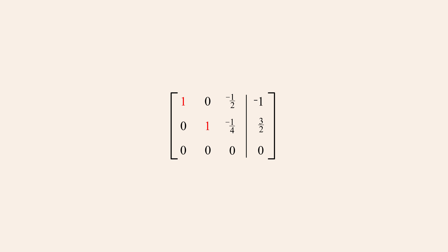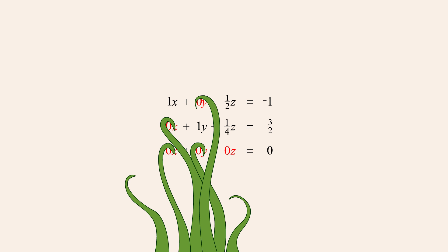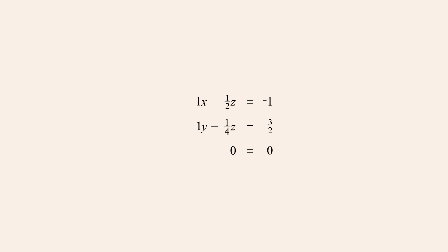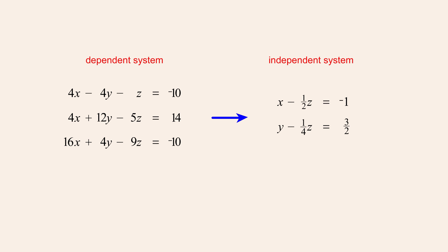Since both leading entries in the matrix are now the only non-zero entry in their columns, this matrix is in reduced row echelon form. Converting this matrix back into equations, eliminating the terms with zero coefficients, eliminating coefficients of one, and the equation zero equals zero, we now have an equivalent system of two independent equations. So once again, Gauss-Jordan elimination has transformed a dependent system of three linear equations into an equivalent independent system of two linear equations. And once again, these equations are simpler than the original equations since each equation contains fewer variables.